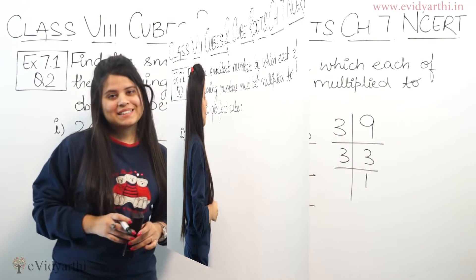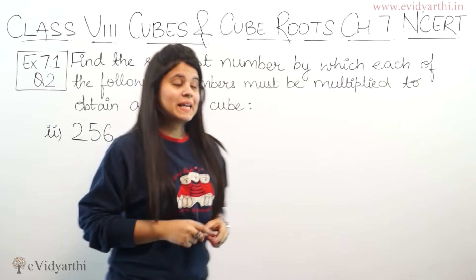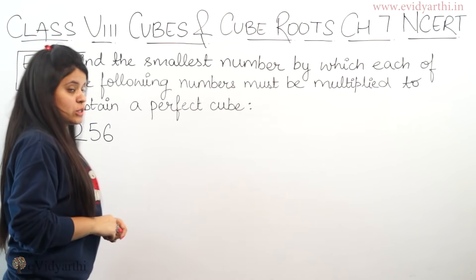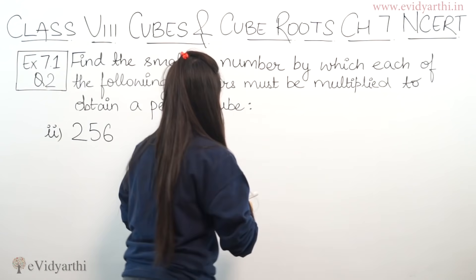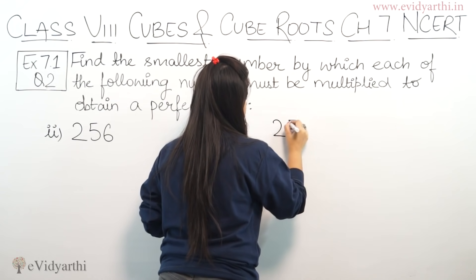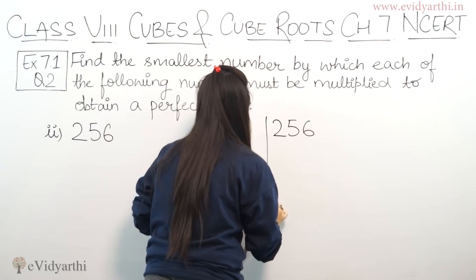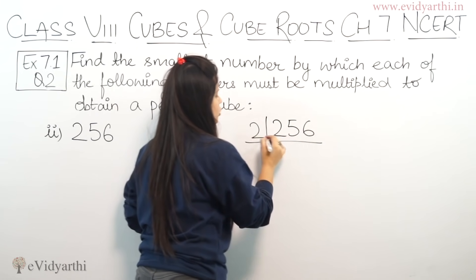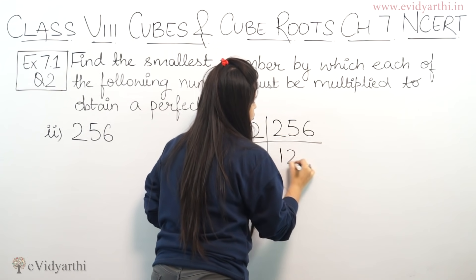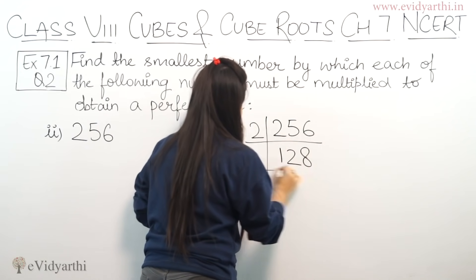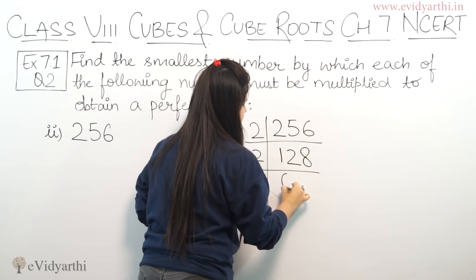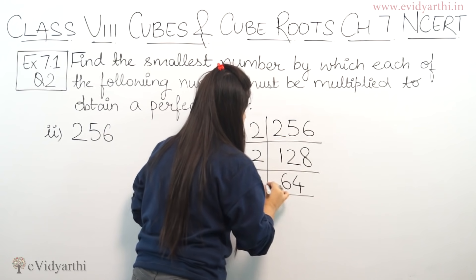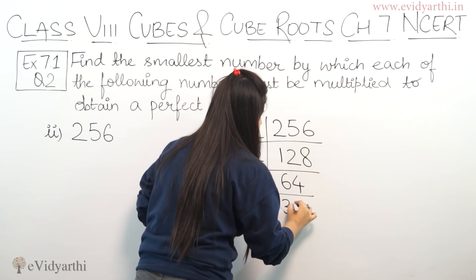Now coming to the second part. The number is 256. Again we will do prime factorization. For 256, we can divide by 2. Dividing gives 128. Again by 2 gives 64. Again by 2 gives 32.